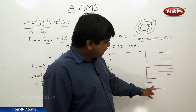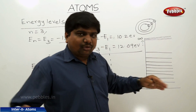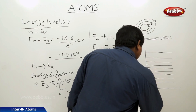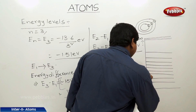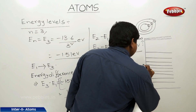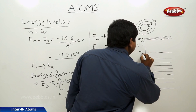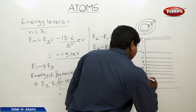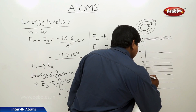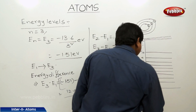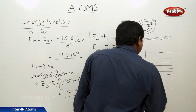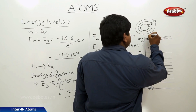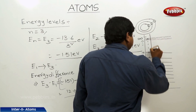In the lower levels, the energy levels are broadly separated. The Lyman series consists of transitions from higher levels down to n equal to 1: transitions 2 to 1, 3 to 1, 4 to 1, and from infinity to 1. This is all about the Lyman series.